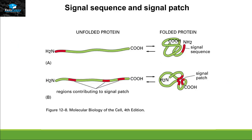Signal sequences can be of two different types. One type is present on one part of the polypeptide chain and will be recognized by the receptors. The other type is that the signal sequence is present in small patches, and the polypeptide chain will fold into its tertiary and quaternary structure, bringing all these signal patches together to make a signal patch that will then be recognized by the receptor.